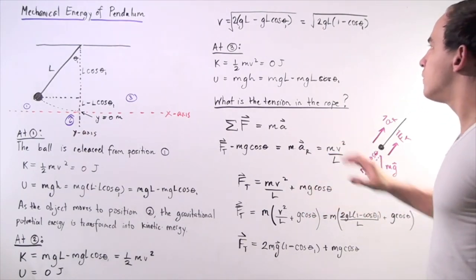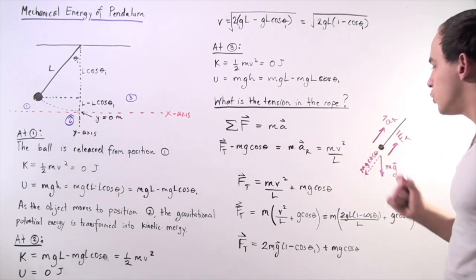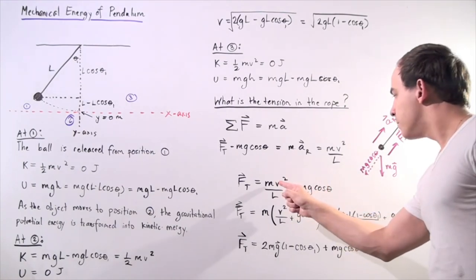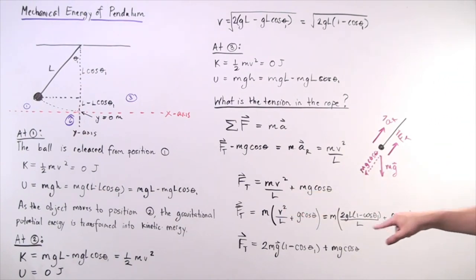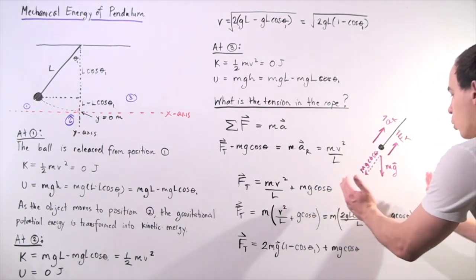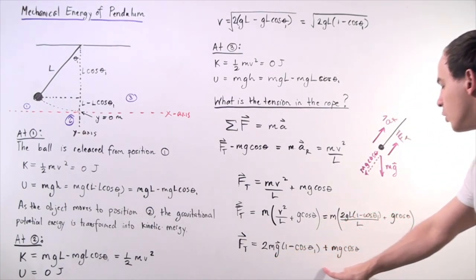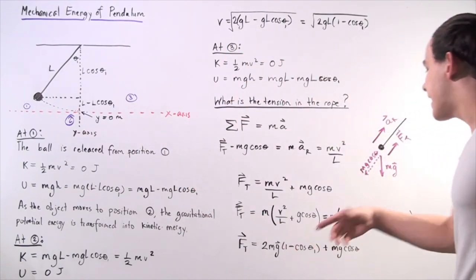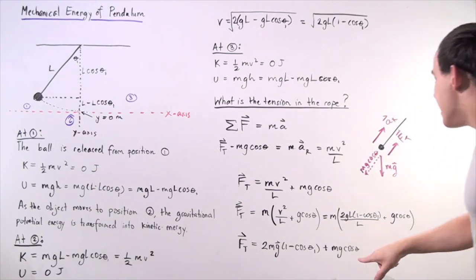We now substitute the velocity expression found earlier. Since v is squared, the square root cancels. Multiplying through by m and noting that the l terms on top and bottom cancel, we arrive at the final formula for tension in the cord: F_T equals m times g times (3 minus 2 cosine theta one minus cosine theta), where m is the mass of the ball, g is the gravitational constant, theta one is the initial angle with respect to the y-axis, and theta is the angle at which we are studying the tension.